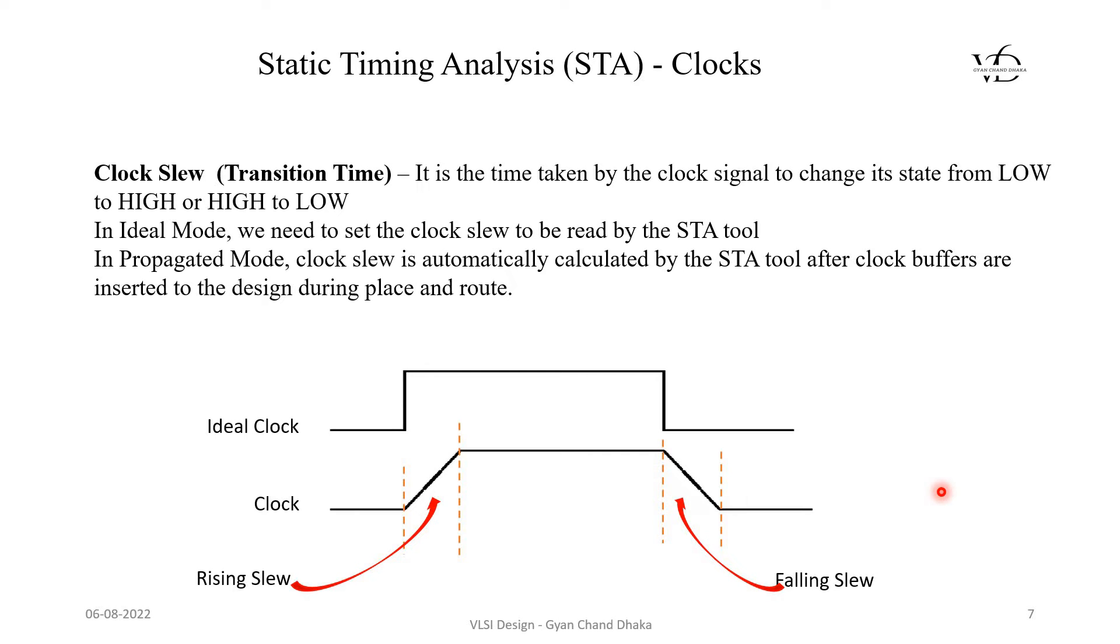Slew is the rate of change of transition of a signal. When the signal transitions from low to high or high to low, the rate at which the transition happens is called the slew. Here we are going to see the slew for the clock signal, which we will call clock slew.